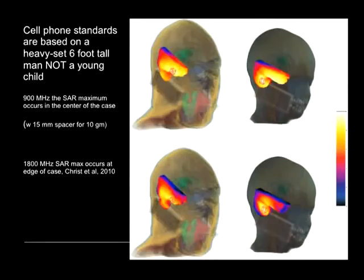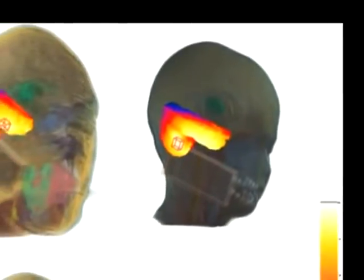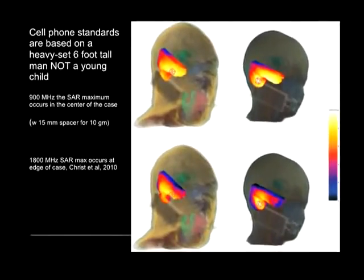This is what we know about our brain. The standard anthropomorphic mannequin — we call him SAM — is over six feet tall and weighed well over 200 pounds. It was his head that was used to model exposure. You see here the younger brain, which absorbs more. This work, done for the cell phone industry, shows that children's brains absorb much more radiation than that of the large adult male model.